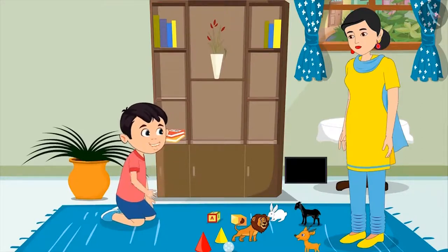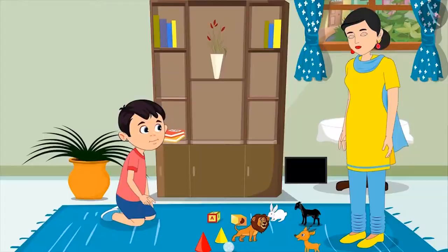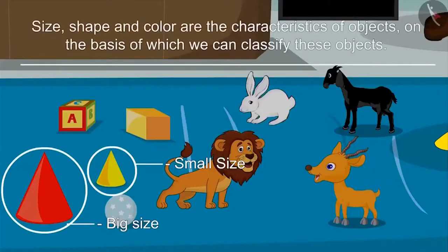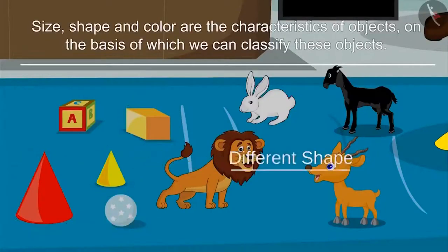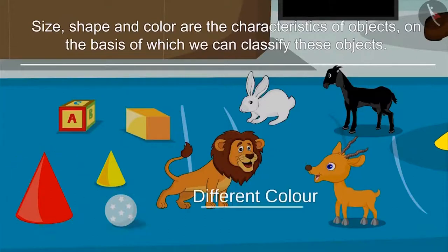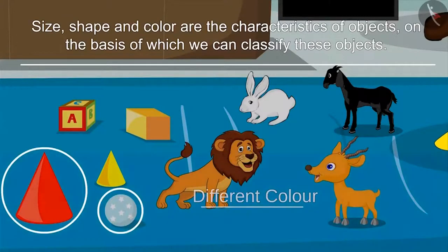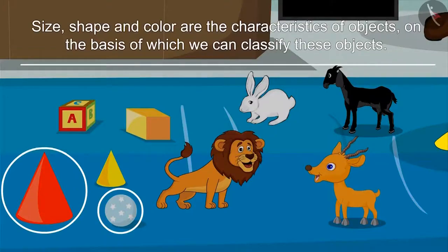I did not get why are you telling me all this? My dear, big or small size, different shape or different color — these are the characteristics of these objects, on the basis of which we can differentiate, I mean classify them.